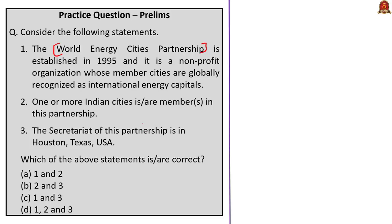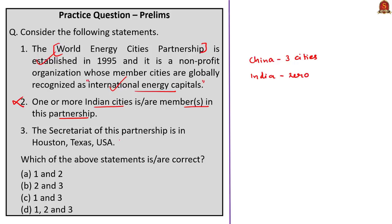This question is with respect to the World Energy Cities Partnership. The first statement: it was established in 1995 and is a non-profit organization whose member cities are globally recognized as international energy capitals — correct. China has three member cities in this partnership, but no Indian city is a member. This makes the second statement — which claims one or more Indian cities are members — incorrect. By eliminating options that say statement 2 is correct (options A, B, and D), the correct answer is option C: one and three.